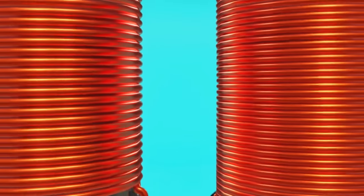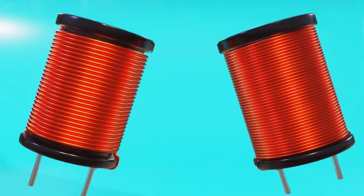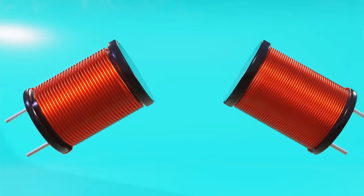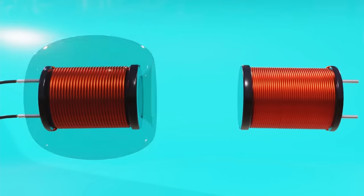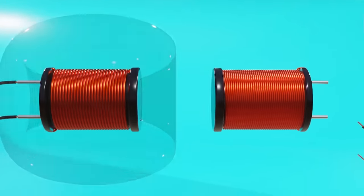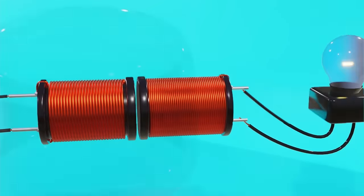In general terms, a transformer is made up of two or more coils of different characteristics. Components that are capable of generating a magnetic field when a current passes through them and also induce a current when they are affected by a varying magnetic field.